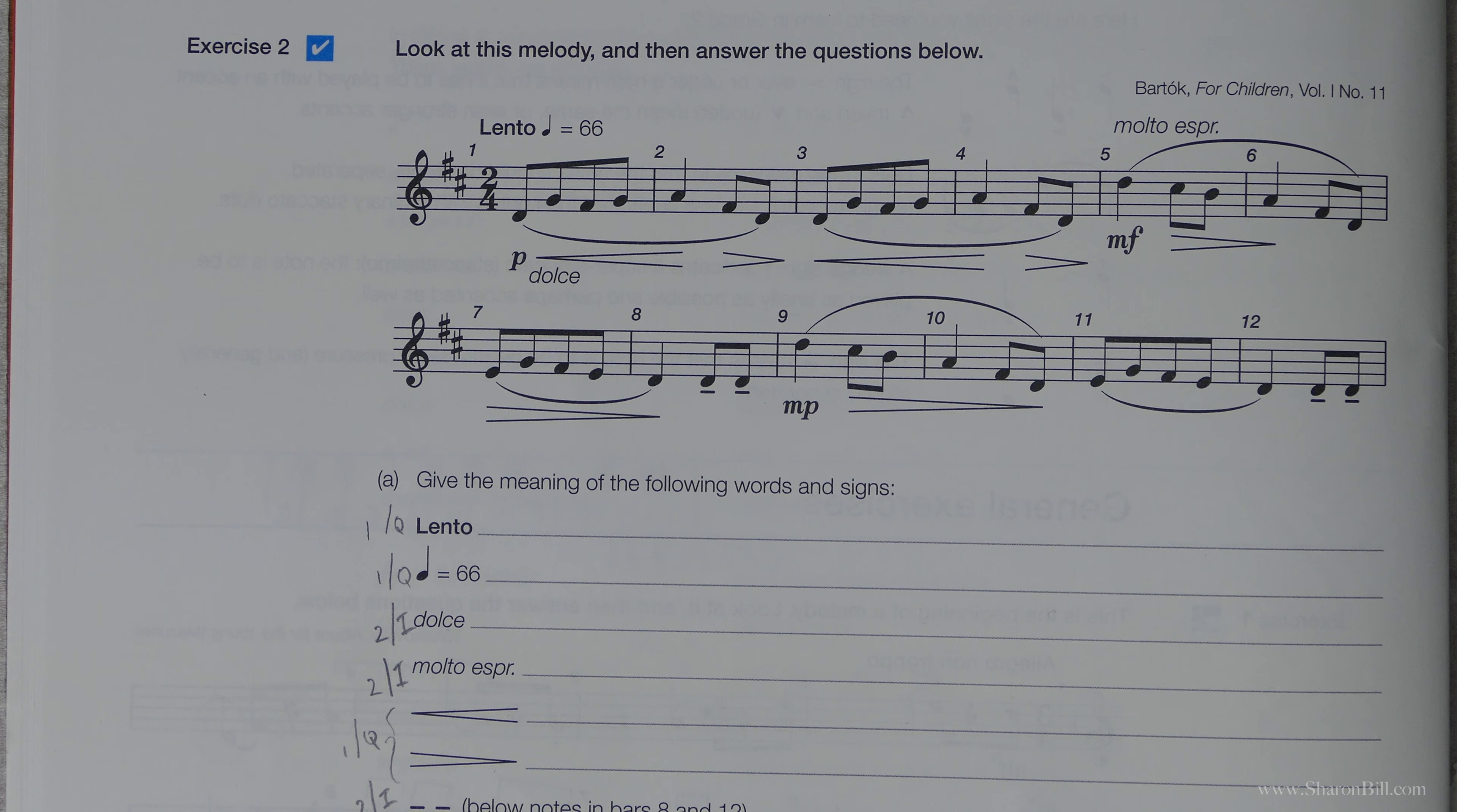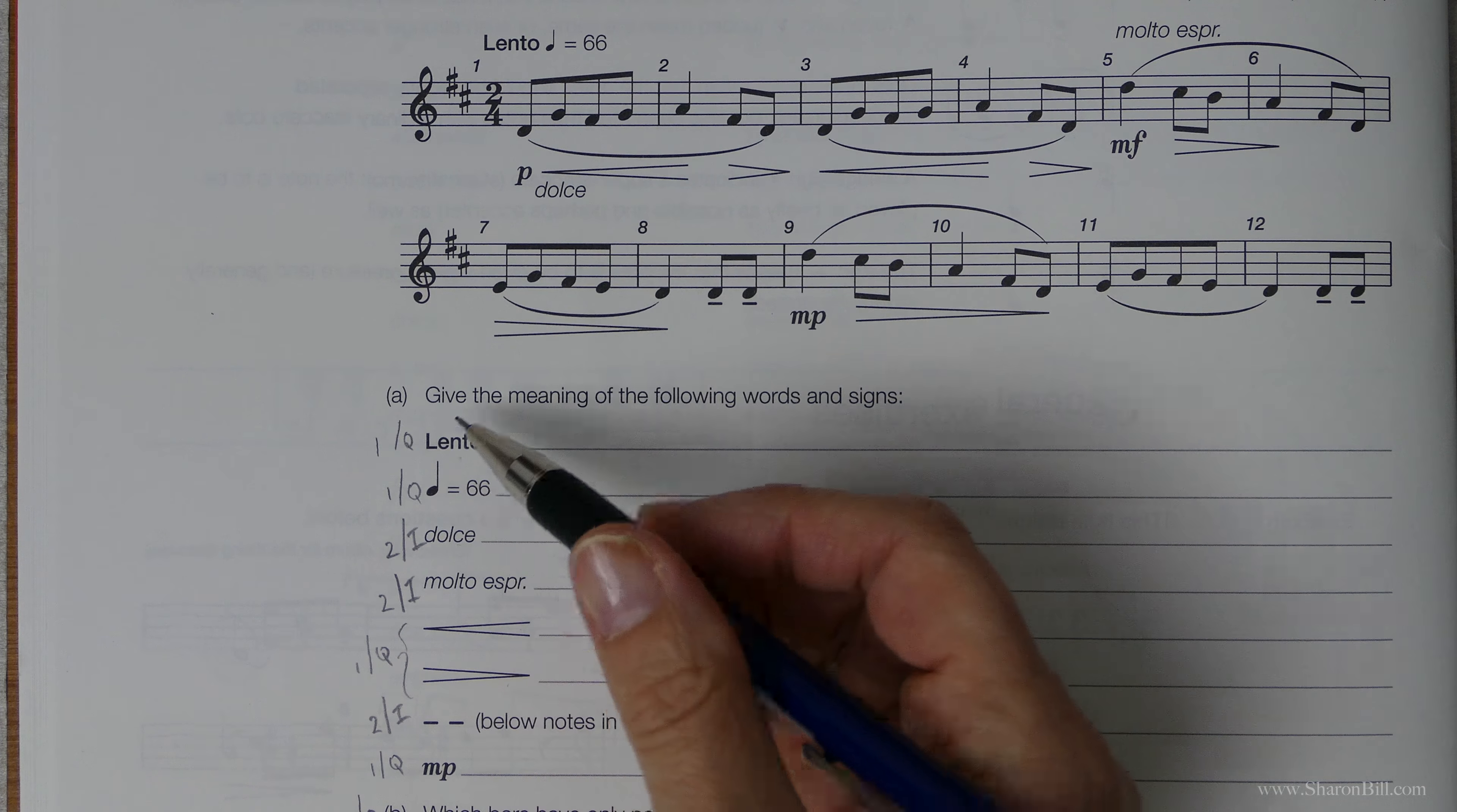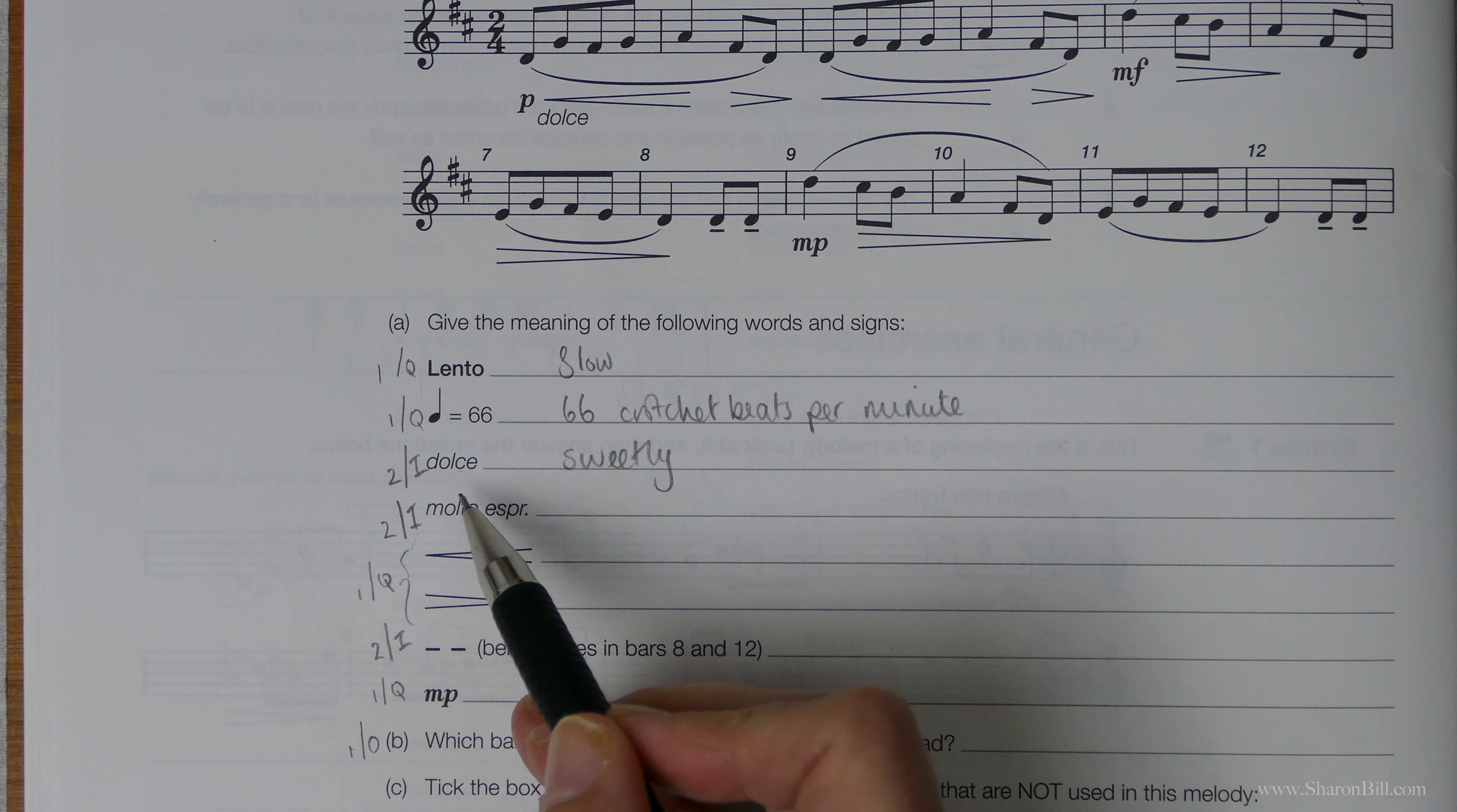So I'm hoping that you've had a little go at this yourself and I'll just work through these. You can always look up to find the information if you're not sure what I'm saying. So lento is the Italian term for slowly. This symbol here means that there are 66 crotchet beats per minute or if you use the terminology you would say quarter notes, 66 quarter notes per minute. That's the tempo marking telling you how fast the pulse would be.